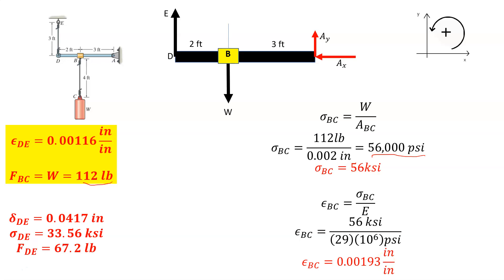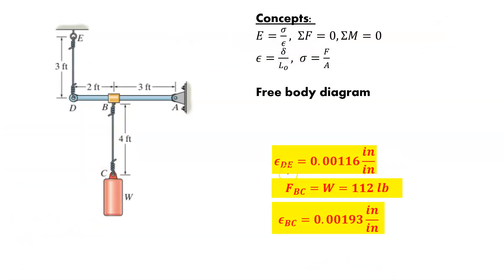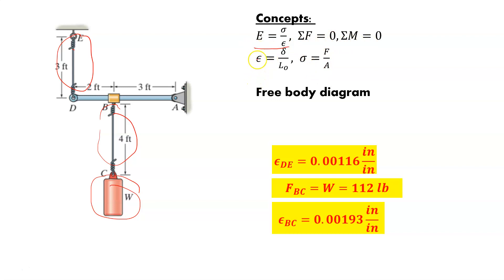To summarize everything — we solved all the things we were asked for: the strain in wire DE, the strain in wire BC, and the weight W. We used basic concepts from the last couple of videos: static equilibrium, Young's modulus, calculating strain, calculating normal stress, and the use of the free body diagram. This is Professor Cummings — if there are any questions, leave them in the comment section, like or share the video, and I'll talk to you guys later.